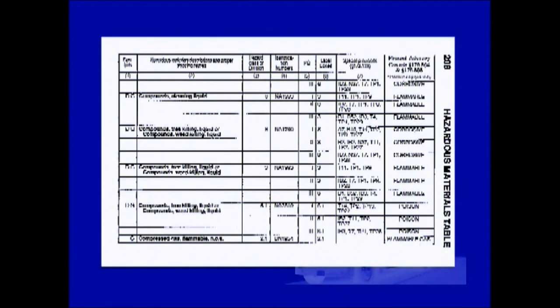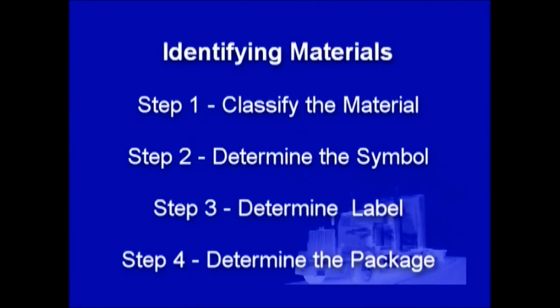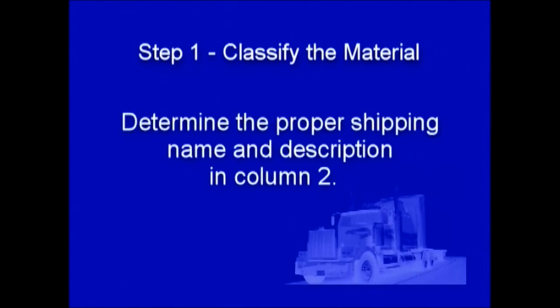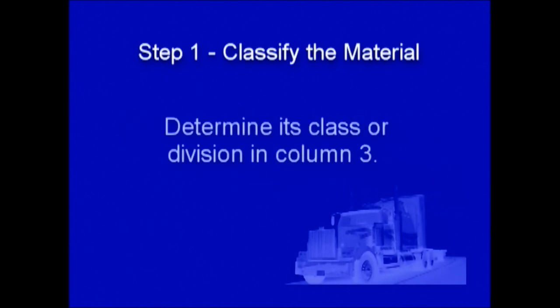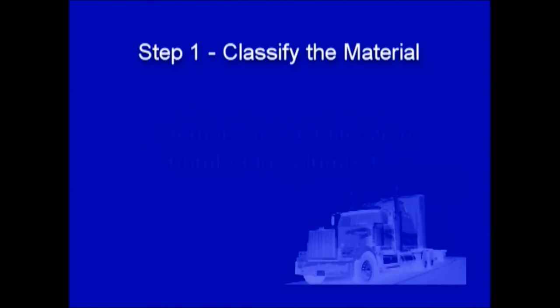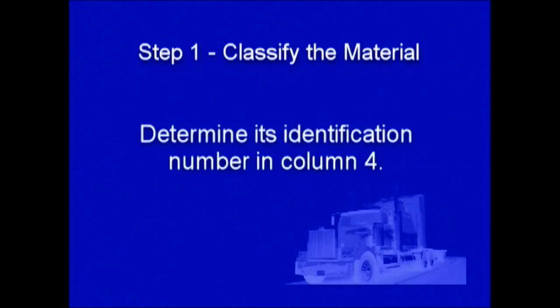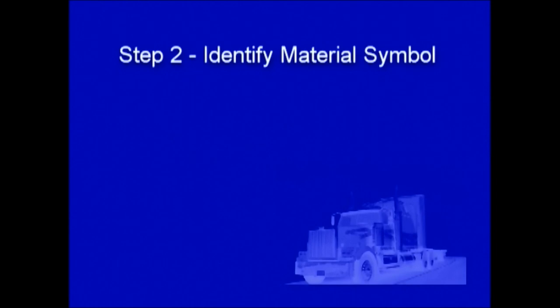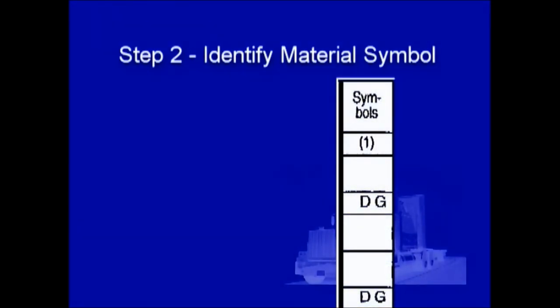Now that we've seen the elements that make up the HAZMAT table, let's see how to use it. Identifying materials using the hazardous materials table is a four-step process. Step one is to classify the material. Step two is to determine the symbol. Step three is to determine the label. And step four is to determine the package. Step one is a four-part process: first, determine the proper shipping name and description in column two; second, determine its class or division in column three; third, determine its identification number in column four; and finally, identify the material's packing group.